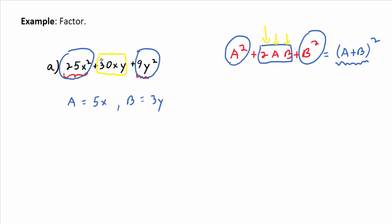It's going to work, and it's super quick. Apply the formula: take a = 5x, b = 3y, add them together, and square it. You get (5x + 3y)². That's it — when it works, it's super quick.